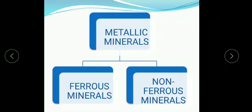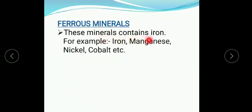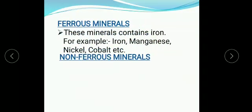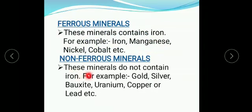Metallic minerals are further classified into 2 parts: ferrous minerals and non-ferrous minerals. Ferrous minerals contain iron — for example, iron, manganese, nickel, cobalt, etc. Non-ferrous minerals do not contain iron — for example, gold, silver, bauxite, uranium, copper, and lead, etc.